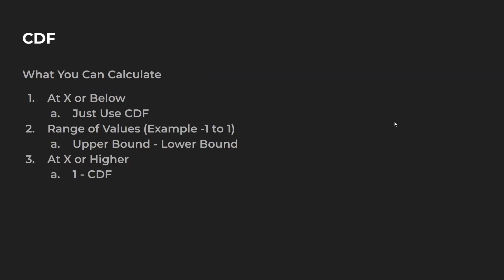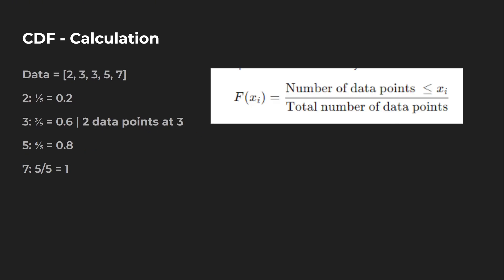Let's take a look at a basic CDF calculation example. Let's say our data points are 2, 3, 3, 5, and 7. For the value 2, we have 1 out of 5 data points being 2 or below, so the CDF is 0.2. For 3, we have two 3s, so 3 out of 5 data points are at 3 or lower — that's a 0.6. For 5, four data points are at 5 or less, so the CDF is 0.8. And for 7, every single data point is at 7 or lower, so that's 1.0 — which is 100% probability.